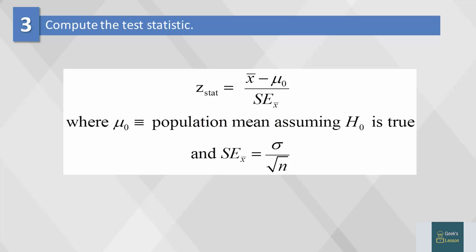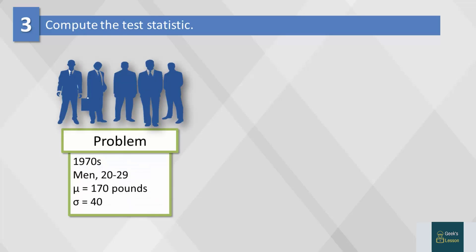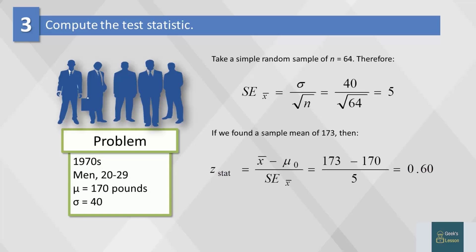In our male weights example, we're going to use the z-statistic because we know the population mean and the population standard deviation. To compute the z-statistic, we simply insert values derived from our sample into the formula. If in one sample we found that the sample mean was 173, then the z-statistic would be .60. Think of this value on the x-axis under a standard normal curve.